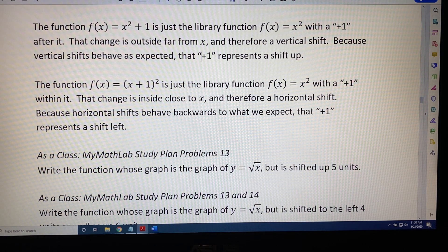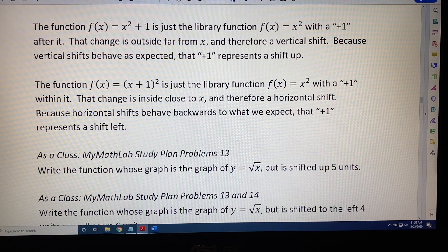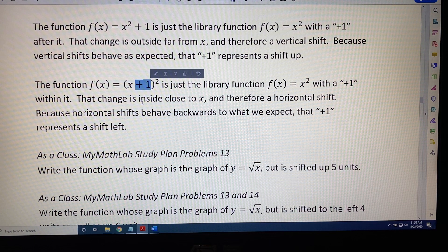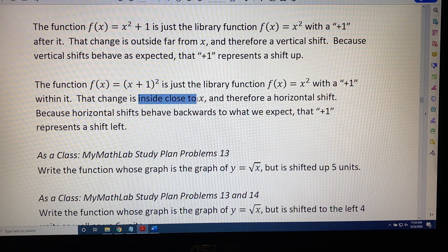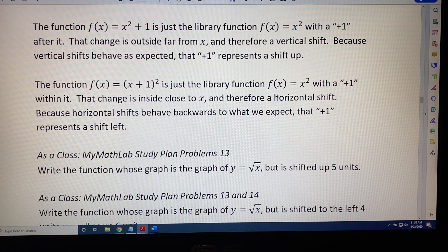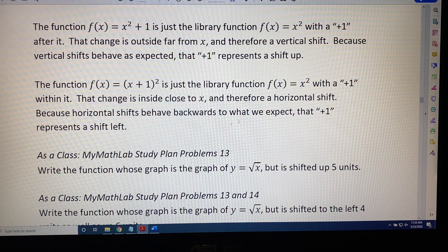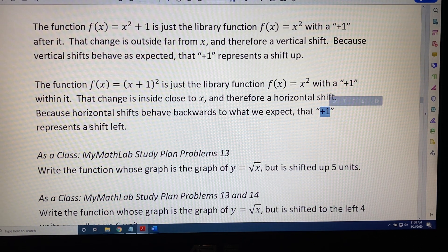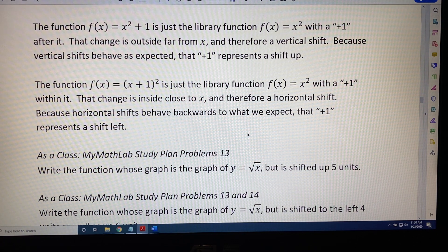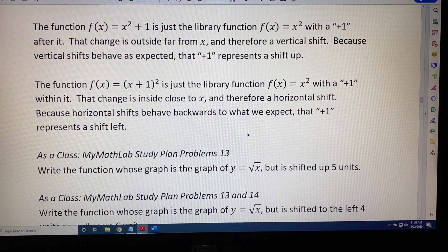However, the function f(x) = (x + 1)² is just the function f(x) = x² with a plus one within it. That change is inside close to x and therefore represents a horizontal shift. Because horizontal shifts behave backwards of what we would expect, that plus one is actually a shift to the left. We're now ready to solve problems involving horizontal and vertical shifts.